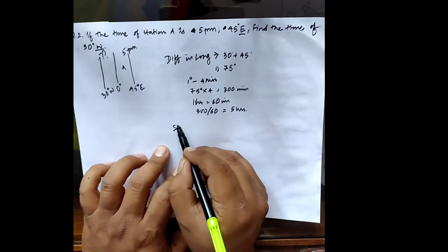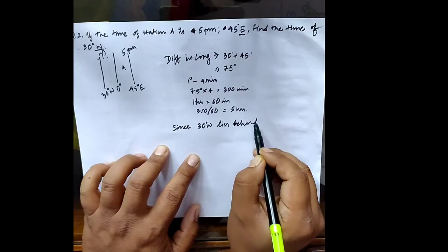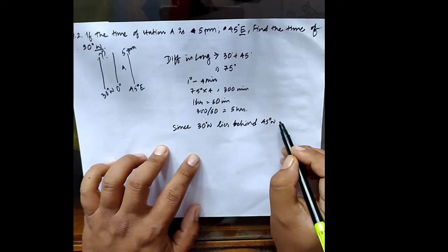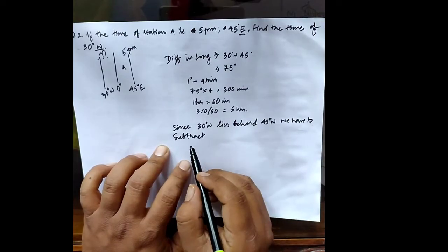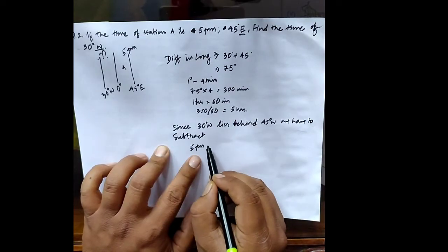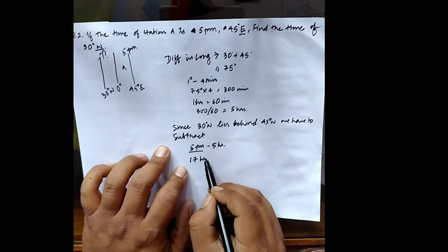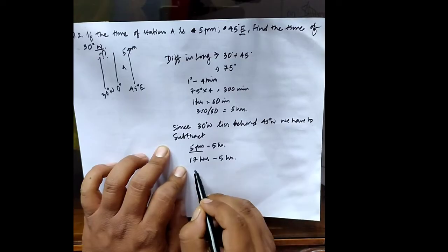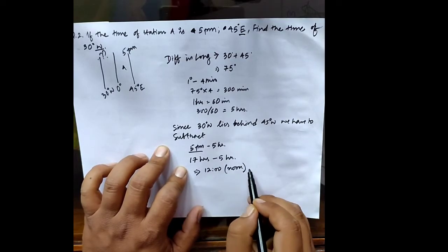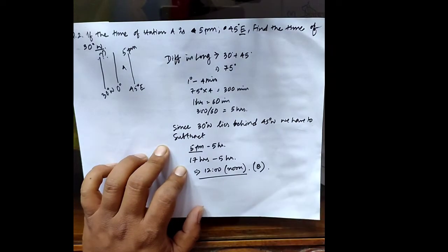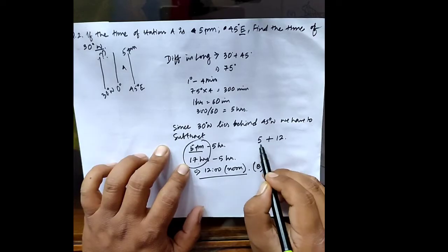Since 30 degrees west lies behind station A at 45 degrees east, we subtract the time. So 5 p.m. minus 5 hours. We need to convert 5 p.m. into 24-hour format — by adding 12 hours we get 17 hours. 17 hours minus 5 hours is 12 hours, which is 12 noon. So the time at 30 degrees west is 12 noon.